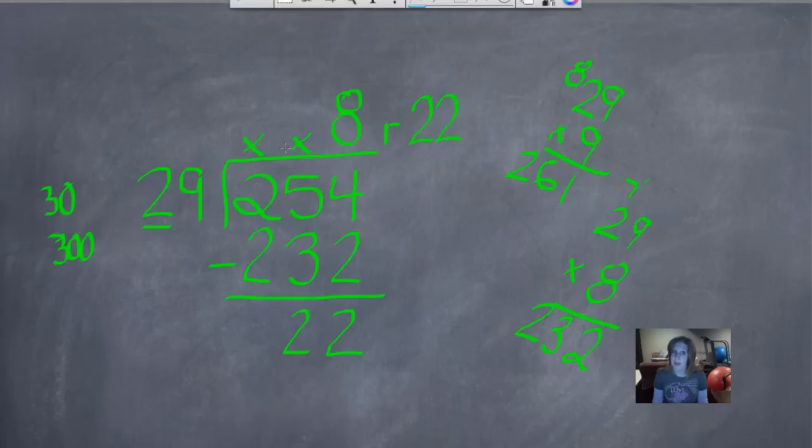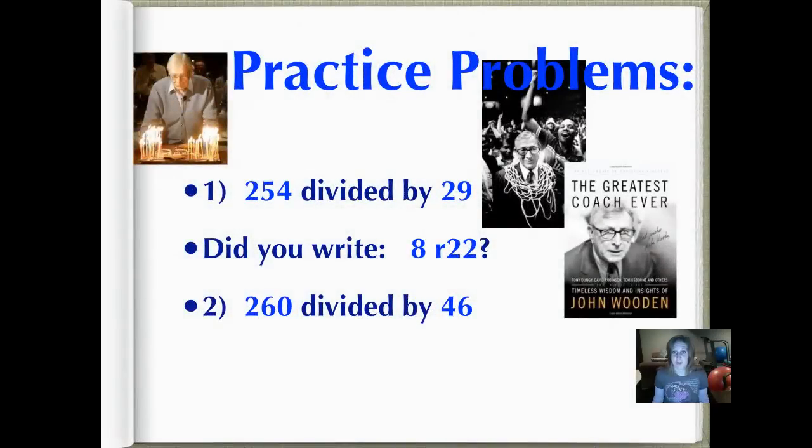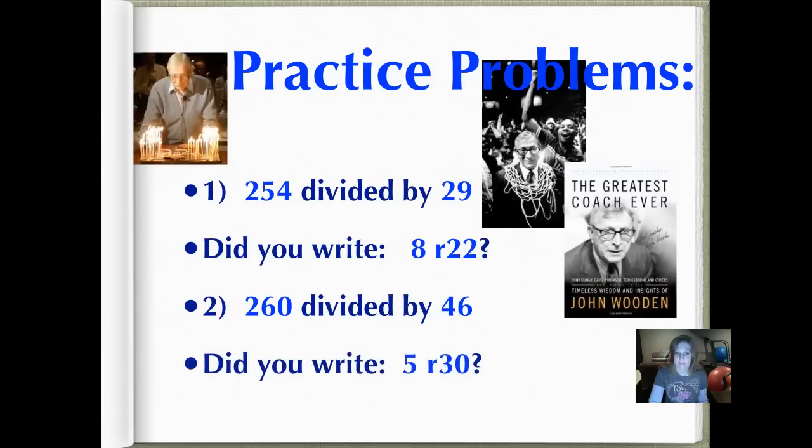Don't forget to check it. 29 times 8, plus 22 is 254. There's John Wooden on his birthday. Number 2. 260 divided by 46. Let's try that one, and then push play when you're ready. Did you write 5 remainder 30? These are really big remainders. Let's see how we got that. This time, I'm going to show you a slightly different way of using front-end estimation.